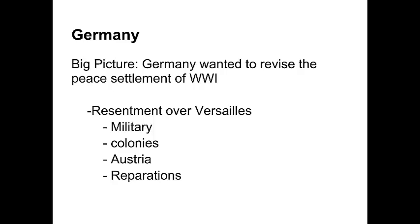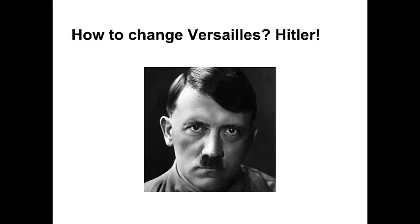Additionally, Germany was allowed no political union with Austria — meaning no treaties, alliances, or joining of the two countries into a single state. Germany was also forced to accept blame for the war and to make war reparations to the Allies. All of this resentment led to very negative feelings in Germany, which allowed for the rise of Adolf Hitler, who promised to change the Treaty of Versailles.